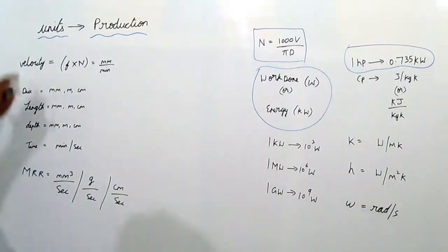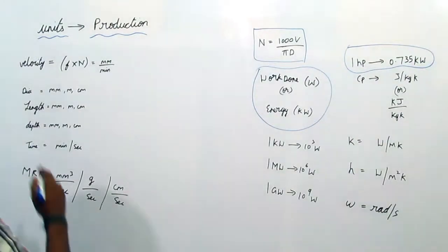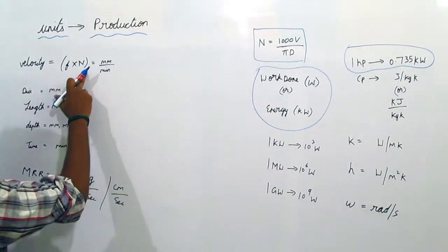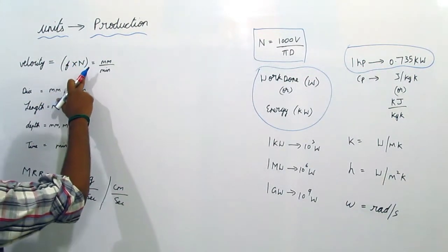In gate mechanical, first we will see important units which are used for production topics. First is velocity. Velocity is given by feed into spindle speed. Feed is in mm and spindle speed is rpm, that is revolution per minute, so combined it's mm per minute.